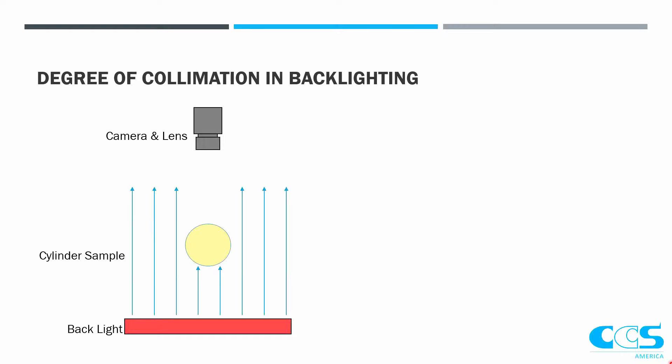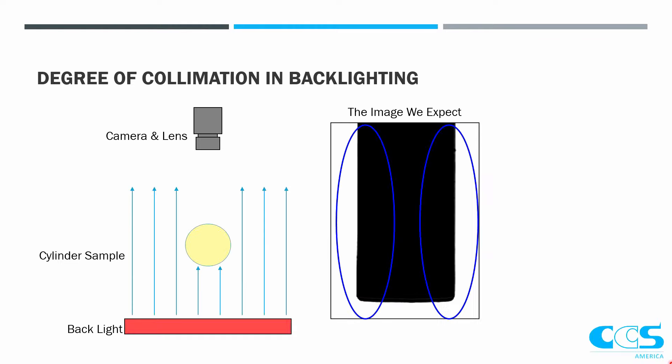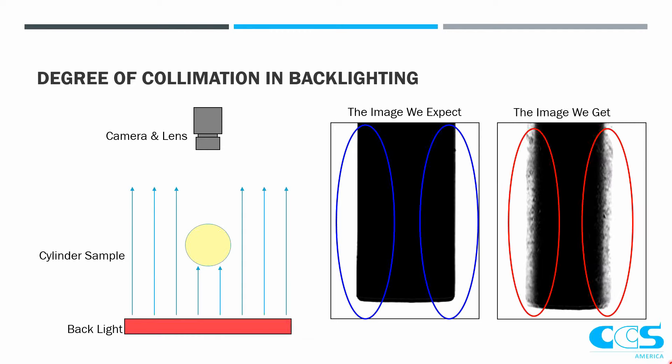When we have a backlight, what we expect is we shine a backlight, light shines straight up, we put a sample in front of it like a cylinder sample, and it blocks the light — this is the image we would expect to get. However, we usually end up getting an image that looks different. So why is this happening? Why is the image not what we expected it to be?